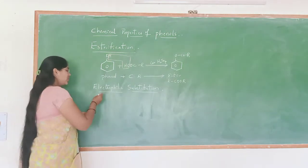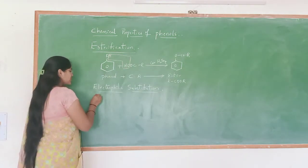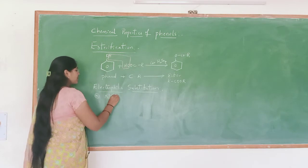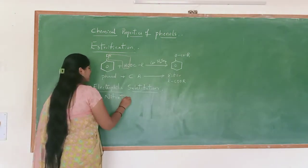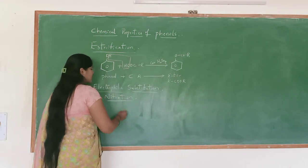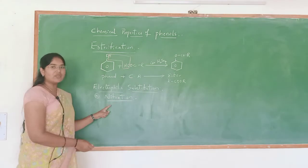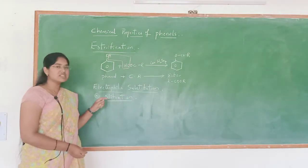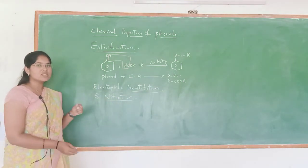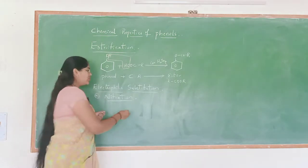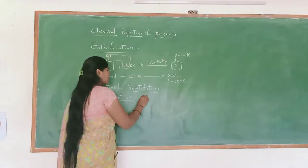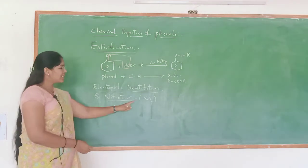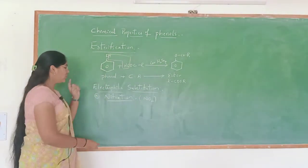One of the examples of electrophilic substitution reaction is nitration. So here one of the electrophiles is replaced by another electrophile that is NO2. So substitution of the NO2 group is known as nitration. This nitration will take place on phenol.